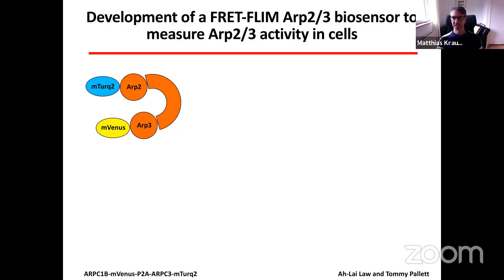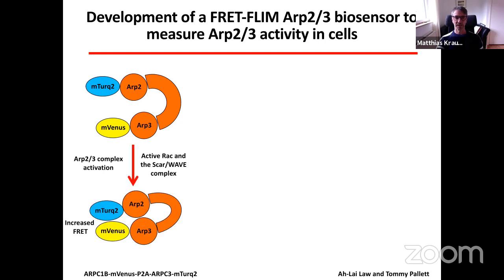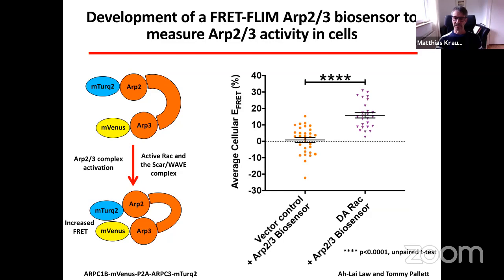Since the SCAR/WAVE complex is a major activator of the Arp2/3 complex in cells, we ideally wanted to measure Arp2/3 activity in cells to see what the effect of loss of NHS-like 1 would be. No tool was available, so we generated an Arp2/3 FRET-FLIM biosensor. This relies on the fact that the Arp2/3 complex undergoes a conformational change upon activation — we tagged two subunits: one with the FRET donor mTurquoise2 and one with the FRET acceptor Venus — and then measured FRET by FLIM. As a proof of principle, transfecting cells with dominant-active Rac along with the biosensor showed significantly increased average cell FRET, demonstrating the biosensor faithfully reports Arp2/3 activity.